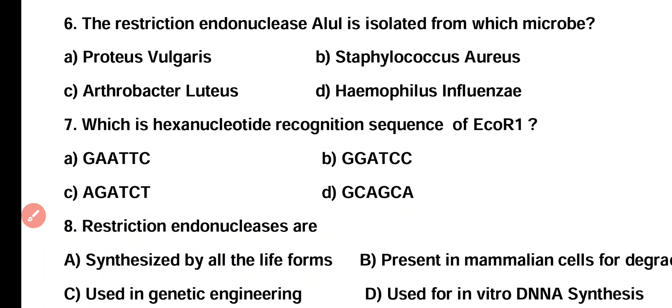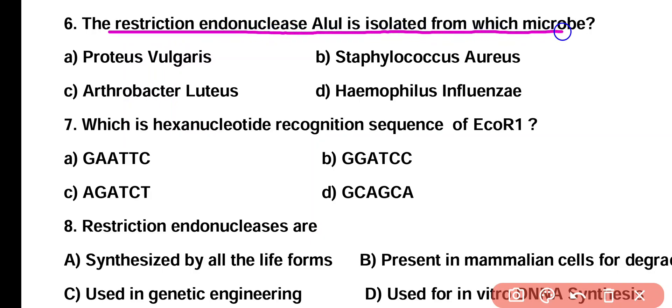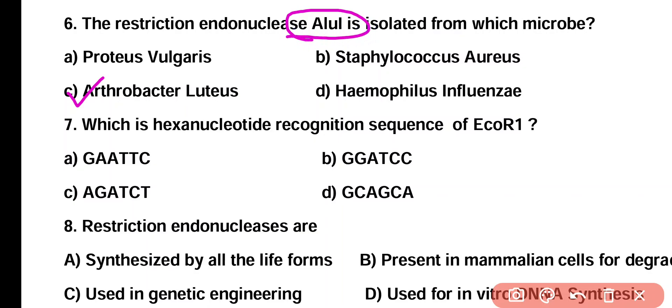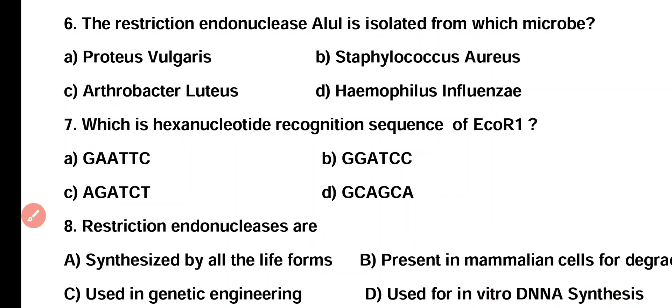Question 6. Restriction endonuclease ALU1 is isolated from which microbe? Option A: Proteus vulgaris, Option B: Staphylococcus aureus, Option C: Arthrobacter luteus, Option D: Haemophilus influenzae. Correct answer is Option C. Restriction endonuclease enzyme ALU1 is isolated from Arthrobacter luteus.